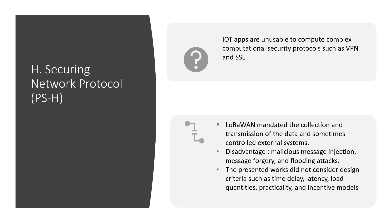The network protocol for IoT targets is designed to transmit data over low-power and unstable networks. IoT devices are generally unsuitable for operations requiring high computing, such as complex encryption of traditional protocols like VPN and SSL. One of the suggested researches on LoRaWAN mandated the collection and transmission of data and sometimes controlled external systems, but a huge disadvantage is malicious message injection, message forgery, and flooding attacks. The presented works did not consider design criteria such as time delay, latency, load quantities, practicalities, and incentive models.